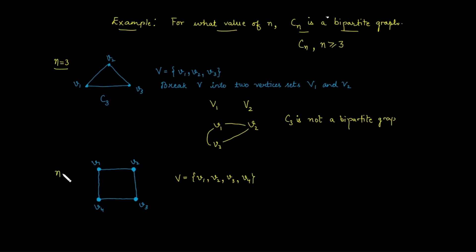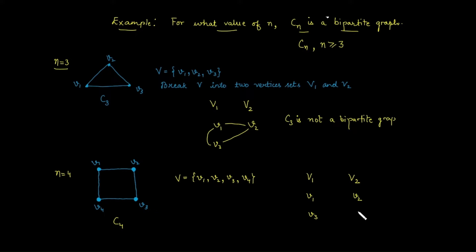For n equals 4, this is a cycle of 4 vertices: V1, V2, V3, and V4. Let's try to break this vertex set into disjoint sets. V1 is adjacent to V2, so place them in opposite sets. V2 is adjacent to V3, so they go in opposite sets. V3 is adjacent to V4, so V4 goes in the opposite set. We can successfully partition the vertices, so C4 is a bipartite graph.